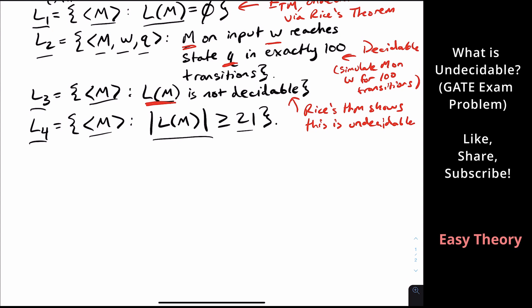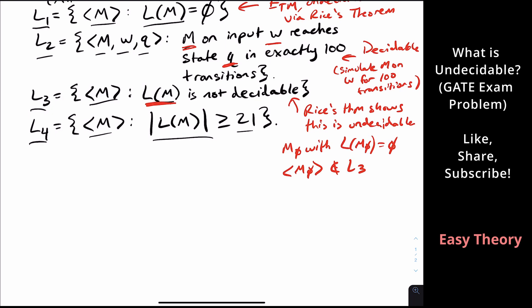Because we could have a machine m sub empty with the language of that machine being empty. Well, then that machine is not in L3 because the empty set is decidable. But now we need to find an example of a machine who has language that is not decidable. And the prototypical problem that's not decidable is ATM.